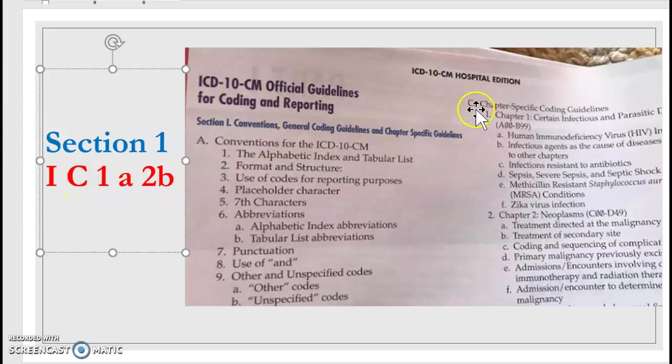Then it says 1, it's 1 right here, chapter 1 certain infectious and parasitic diseases, and then it says A. So the A is human immunodeficiency virus. You don't see a 2B because now we have to find this location to go further into our A section because 2B is another subdivision of A.